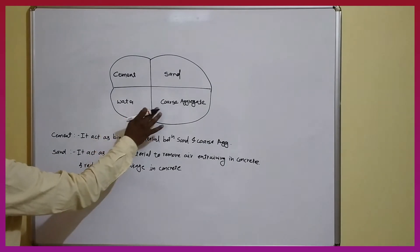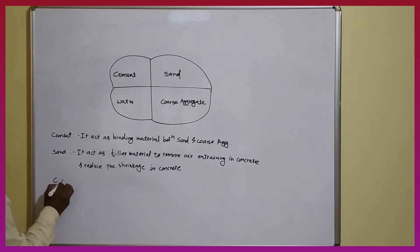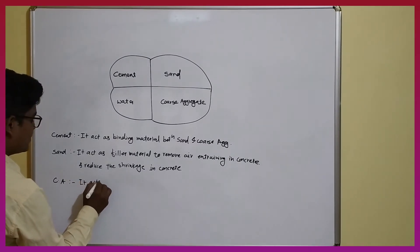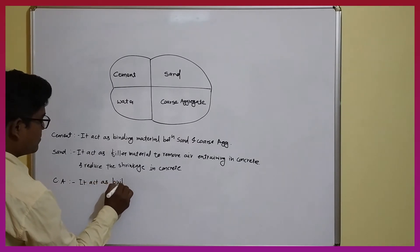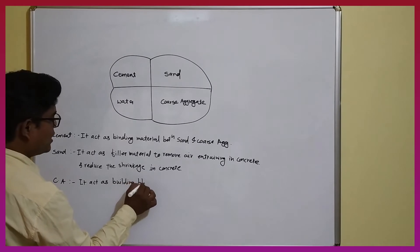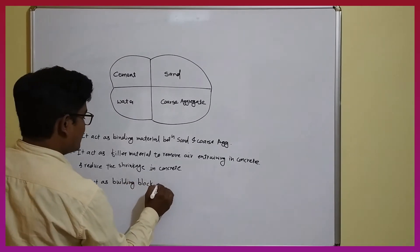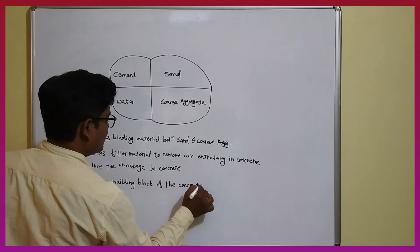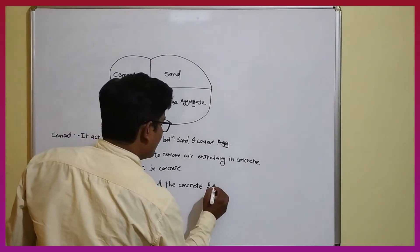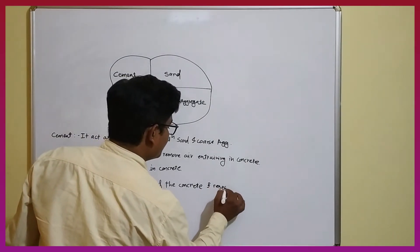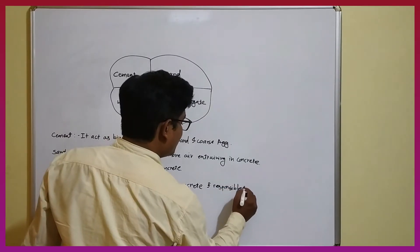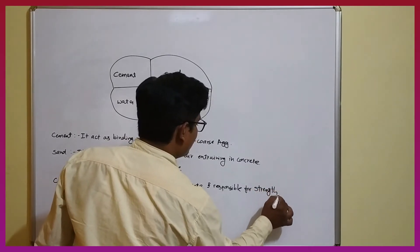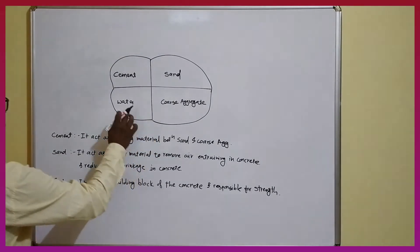Similarly, the third material is coarse aggregate. It acts as the building block of the concrete and is majorly responsible for the strength of concrete. And the last material is water.